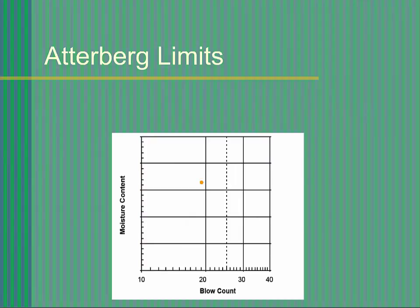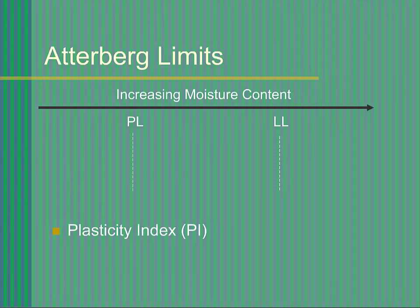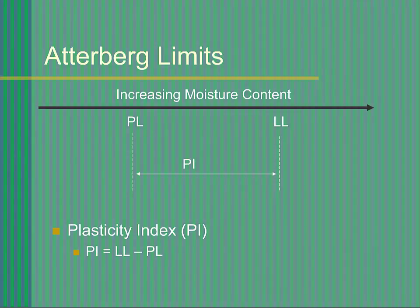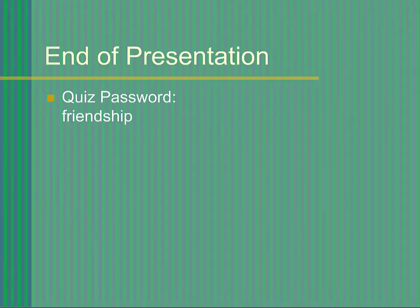Plot your data on a semi-log plot with blow count on a logarithmic horizontal axis and moisture content on an arithmetic vertical axis. Connect the points with the best fit straight line. The moisture content that corresponds to the intersection of this line and the 25 blow count coordinate is the liquid limit. The plasticity index, PI, is the numerical difference between the liquid limit and the plastic limit. It is a measure of how much water a soil can absorb between its plastic and liquid states. In this example, the plasticity index is equal to 61 minus 22, or 39. From the Atterberg limit test results, you can determine the group symbol and group name using the Unified Soil Classification System. This concludes this presentation.